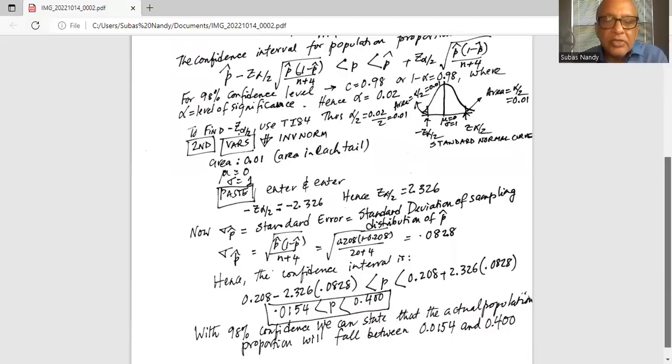When we do the calculations correctly, for the left boundary we do 0.208 minus 2.326 times 0.0828, and the answer is 0.0154. Similarly, for the right boundary, we do 0.208 plus 2.326 times 0.0828, and that is 0.4.